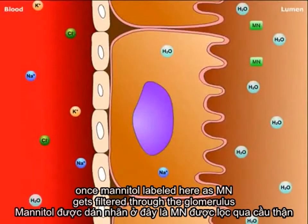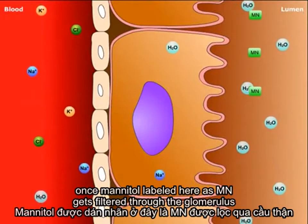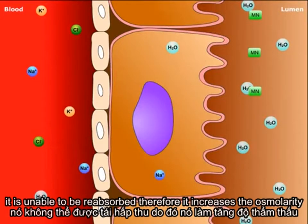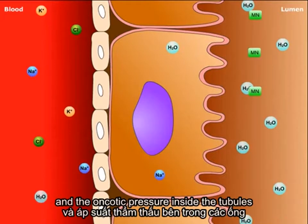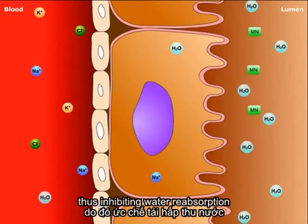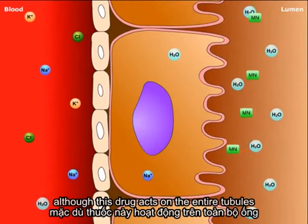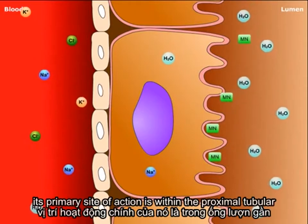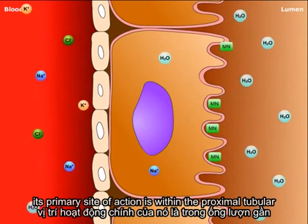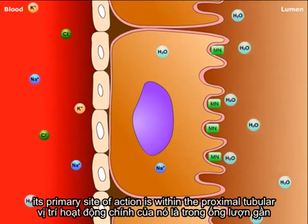Once mannitol, labeled here as MN, gets filtered through the glomerulus, it is unable to be reabsorbed. Therefore, it increases the osmolarity and the oncotic pressure inside the tubule, thus inhibiting water reabsorption. Although this drug acts on the entire tubule, its primary site of action is within the proximal tubule.